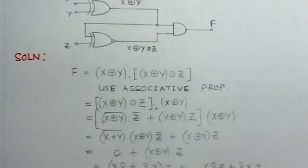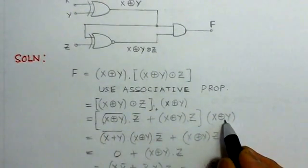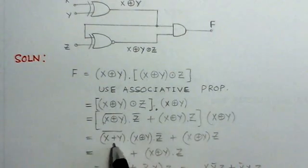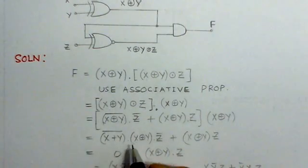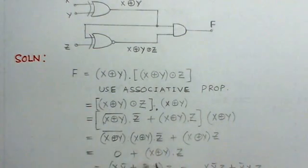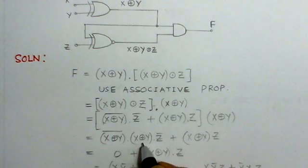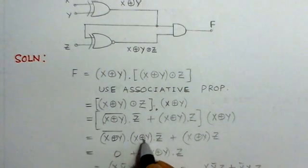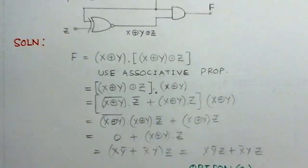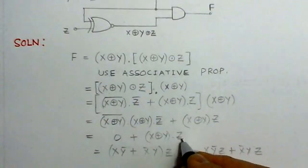So, we can further simplify this. Next, we open up this bracket. So, this is (X exclusive OR Y) complement times Z complement, plus (X exclusive OR Y) times Z plus these terms. Now, X exclusive OR Y and its complement—this is the complement, and this is X exclusive OR Y—they will be 0. They will make it 0. So, the corresponding term which is left out of it is (X exclusive OR Y)Z.